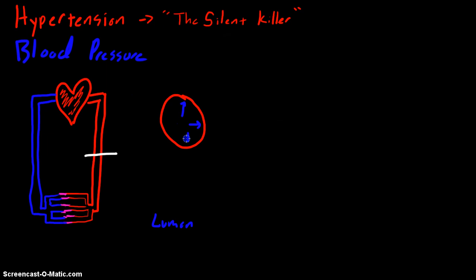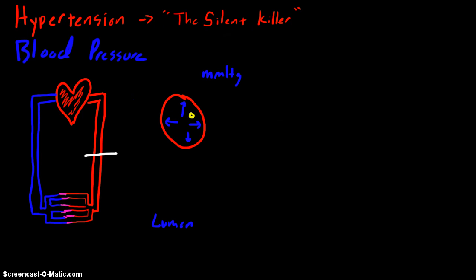That fluid exerts an outward pressure on the arterial wall. That pressure is measured in millimeters of mercury — those are the units we use. If we were to do an experiment and put a little sensor in the lumen of the artery that was measuring the pressure inside the lumen, its graph might look like this.